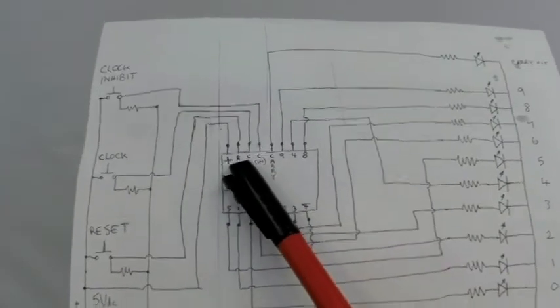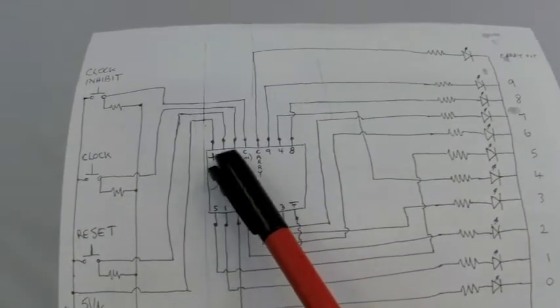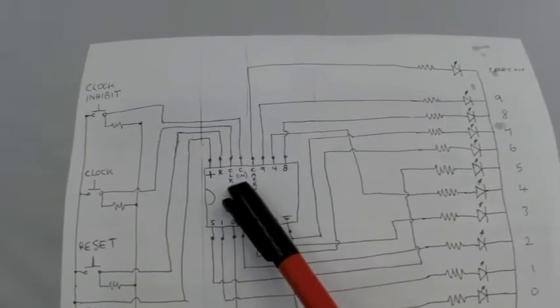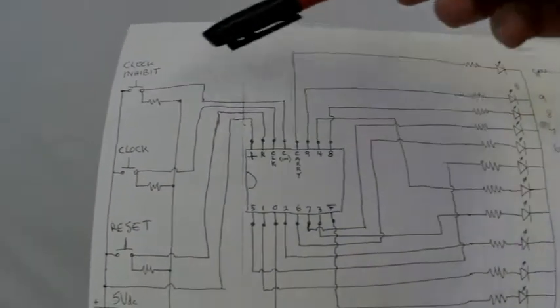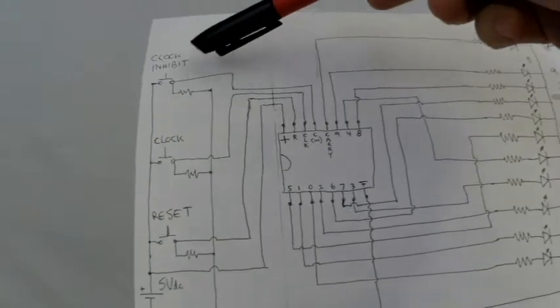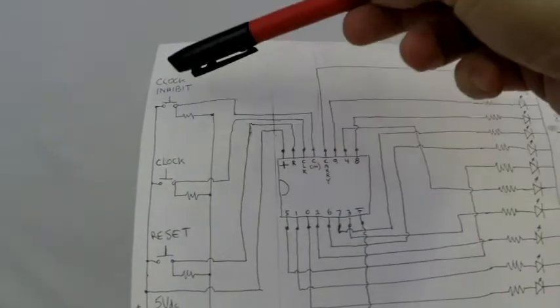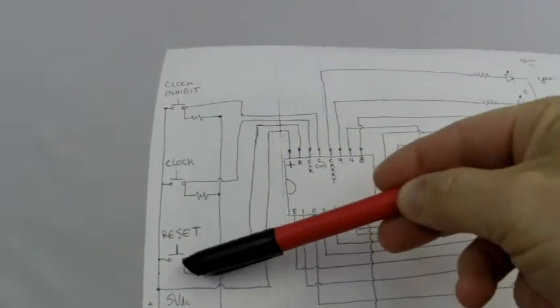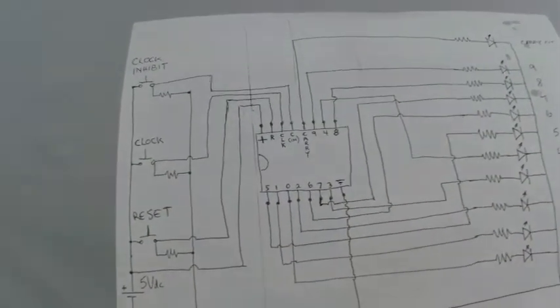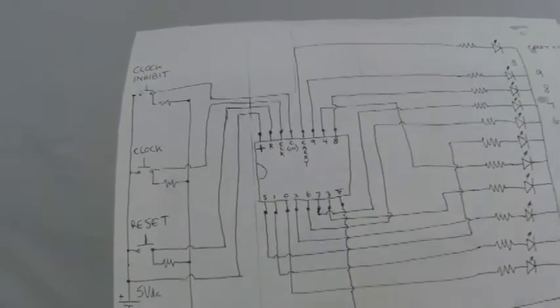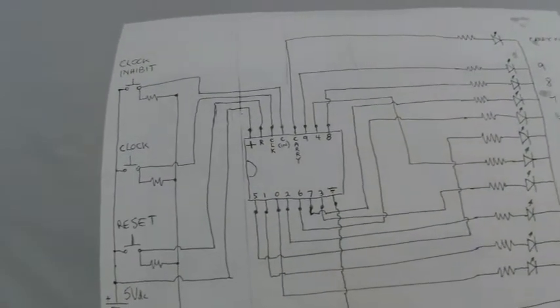And on the top of the pin here, on top of the chip, we have reset, clock, clock inhibit, and then we are getting to the outputs. So, I set up some momentary push buttons for clock, clock inhibit, and reset. This way I can talk my way through it, and you can look at it at slow speed, and understand actually what is going on, and when things happen.